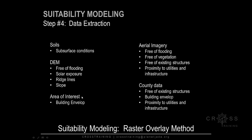From the area of interest, we can obtain our building envelope. From aerial imagery, we can find lands that are free of flooding, free of vegetation, and free of existing structures. We can also extract information about infrastructure, such as streets and road locations.